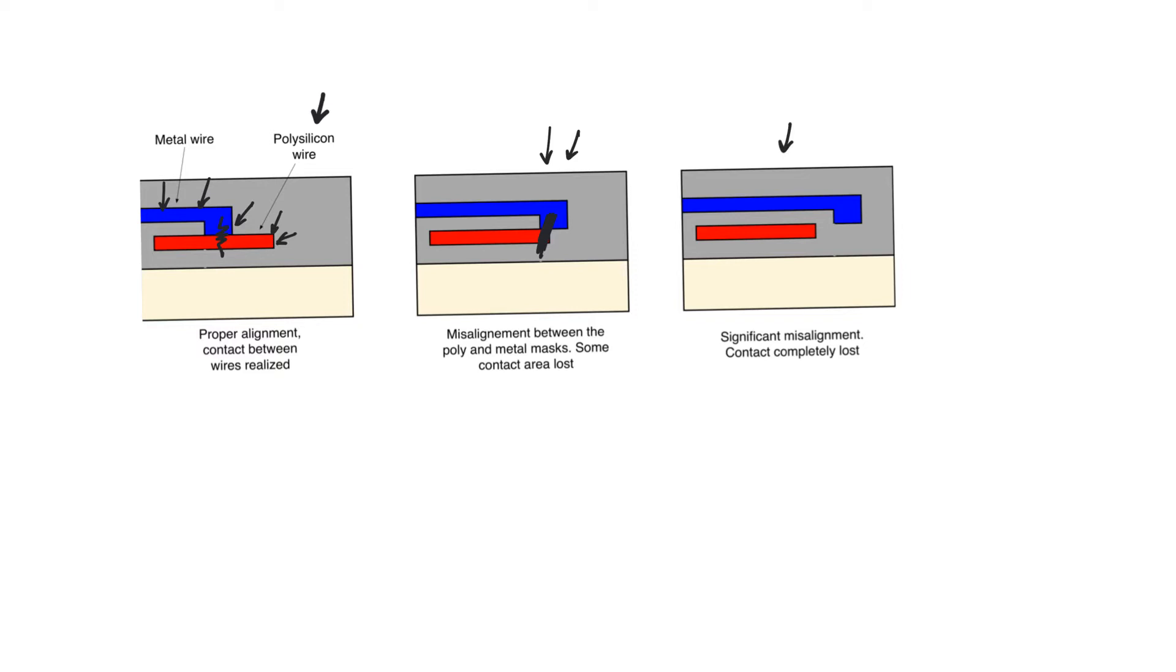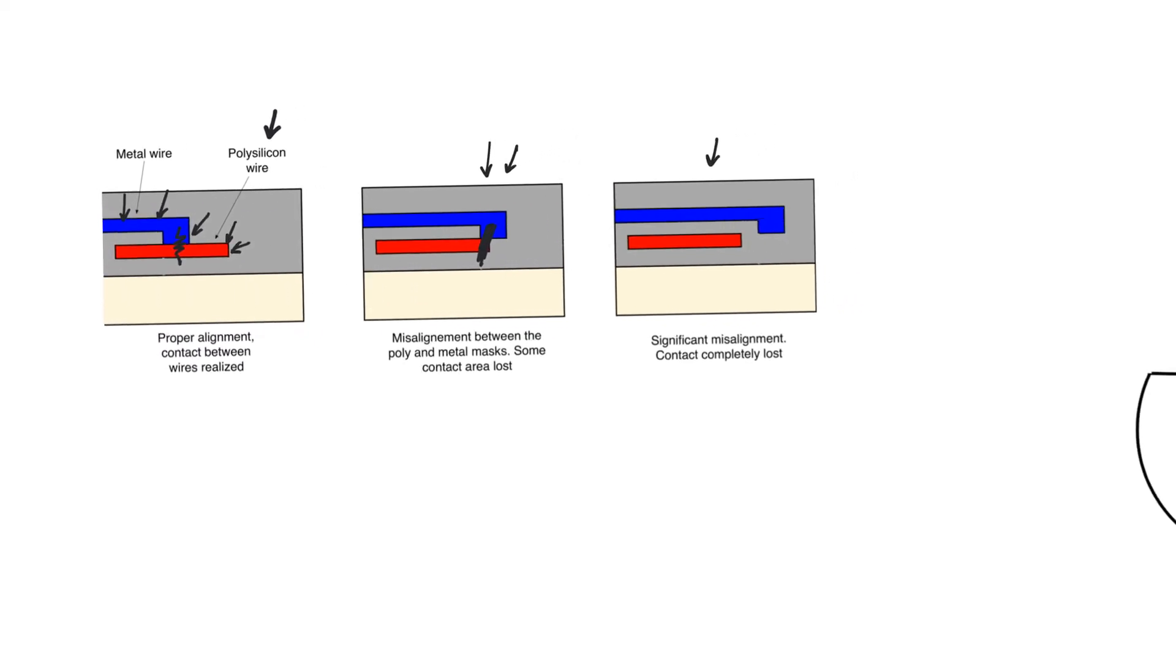This is particularly important in projection exposure because in projection exposure we use stepping and we are exposing only a certain area of the wafer at a time. So we need to ensure that the mask is correctly aligned on top of the part that we are stepping to at this particular step.